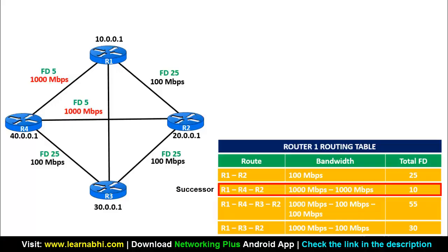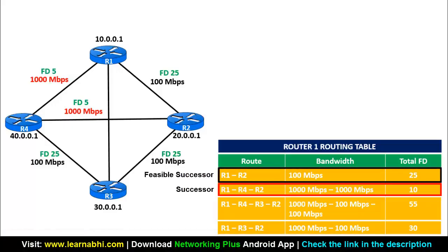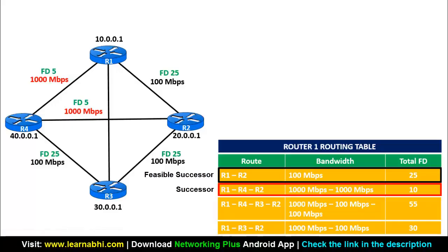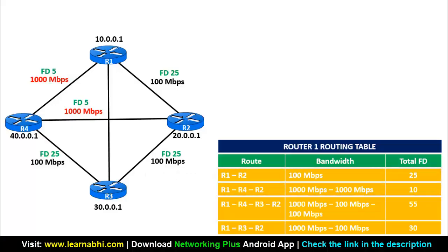Route 2 is the first route Router 1 will choose for sending packets, which is why it is the successor. The feasible successor is Route 1, because it is the second-fastest available route. So if Route 2 fails, Router 1 will choose Route 1 as the feasible successor. This is how the entire concept of EIGRP works.